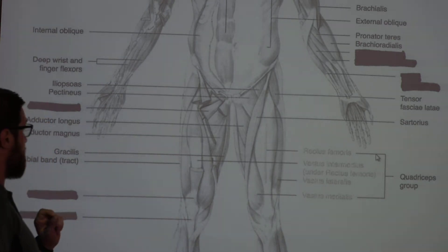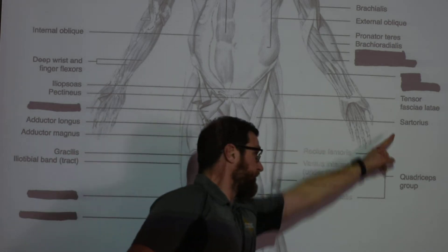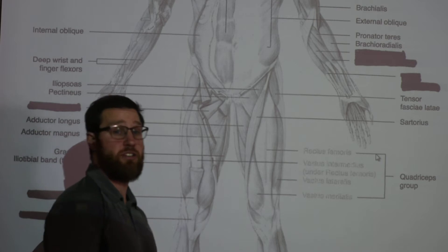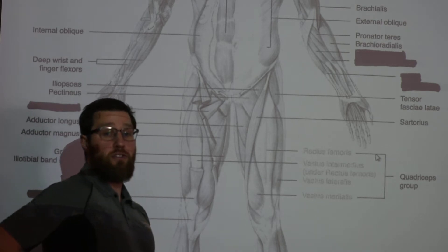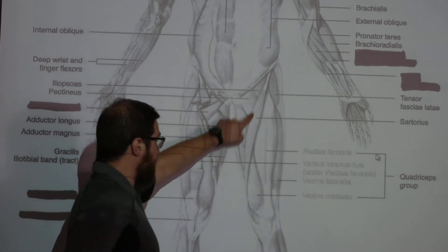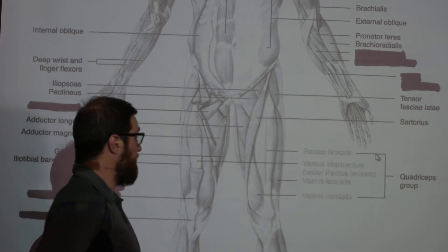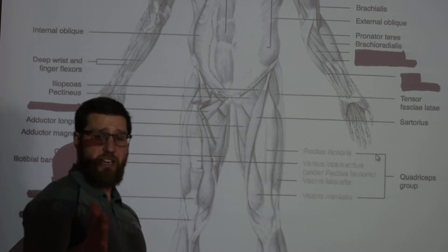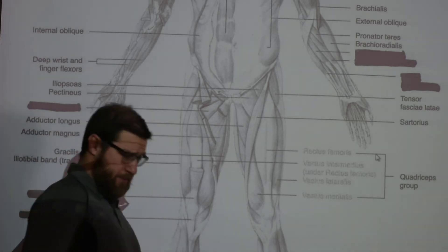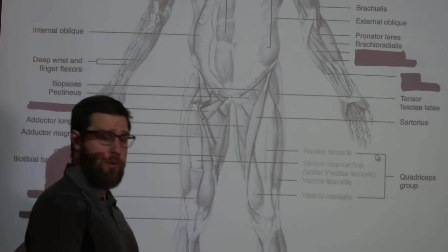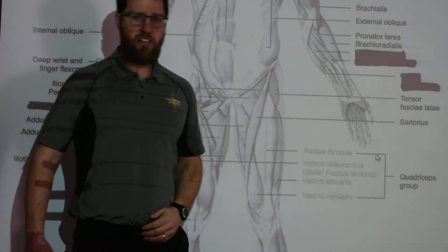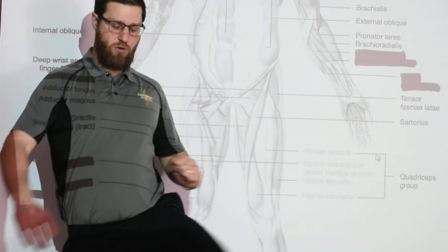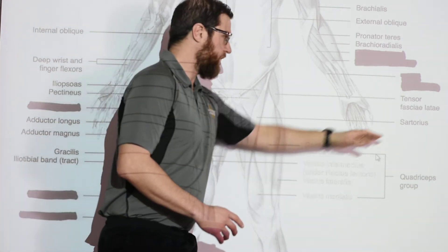The sartorius is famous for being the longest muscle in your body, going all the way from your pelvis down to your tibia. It is primarily involved in internal rotation of your leg, and sometimes adduction as well. When you rotate your knee inward, that internal rotation is primarily your sartorius.